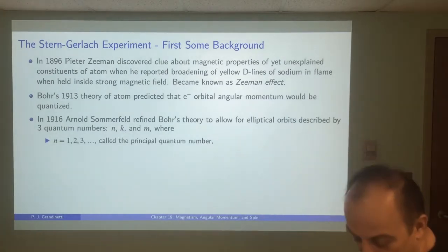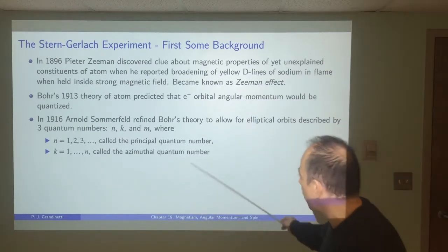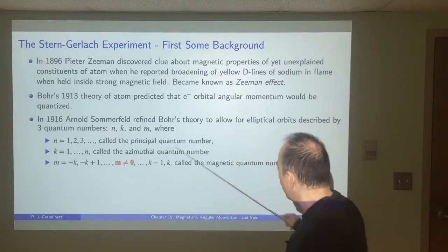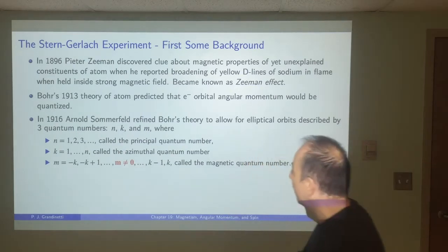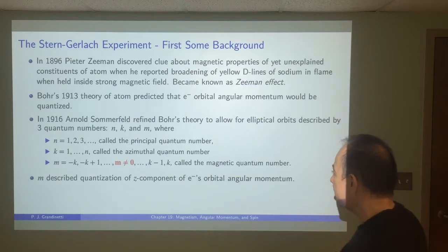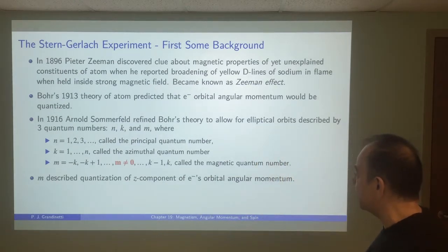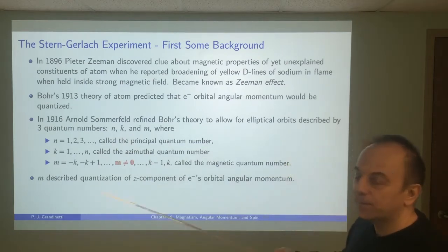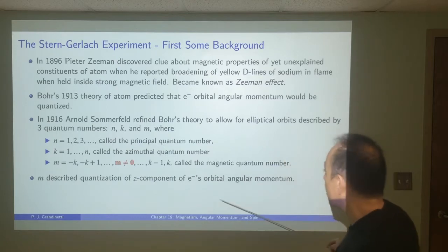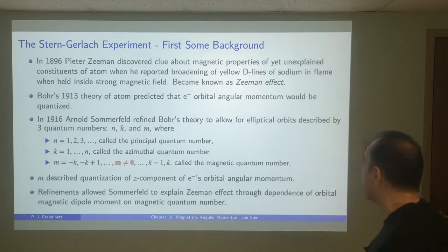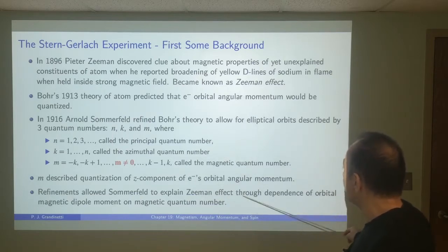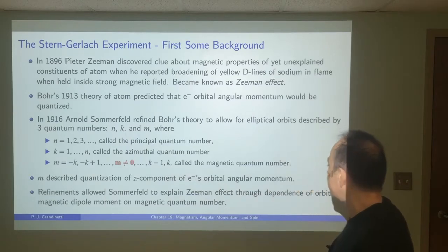They were still working with this idea of Bohr's theory, but they didn't have de Broglie's hypothesis. Sommerfeld was working on Bohr's theory, and he came up with a way to describe orbits that were elliptical. He was able to describe those orbits by three quantum numbers: N, K, and M. He called N the principal quantum number with values of 1, 2, and 3. K was called the azimuthal quantum number with values of 1 to N. And M values went from minus K to K. But one of the things that's interesting about Sommerfeld's theory was that M of 0 was not allowed.